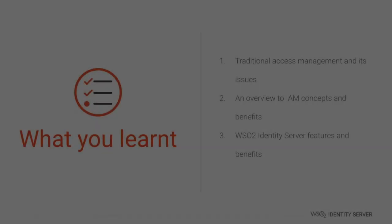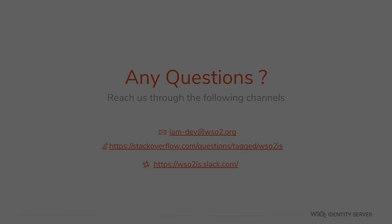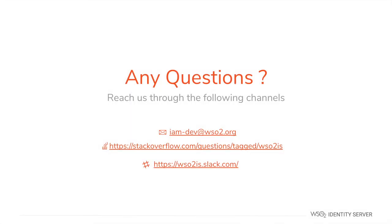Let's have a quick recap of what we learned. First, we got to know about traditional access management and its issues. Then we got an overview of IAM concepts and benefits. Finally, we got introduced to WSO2 Identity Server features and benefits. If you have any questions or need further clarification, please feel free to get in touch via email at iam-dev@wso2.org, on Stack Overflow using the tags 'wso2' or 'wso2is', or on the Slack channel at wso2is.slack.com. Thanks for watching — we hope to meet you in another exciting training video.